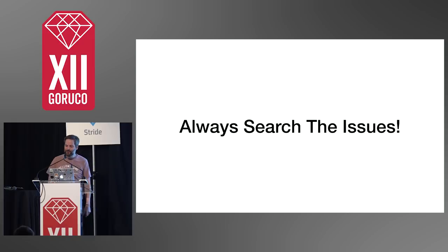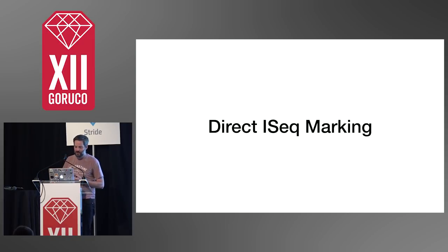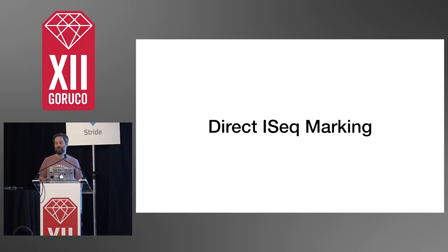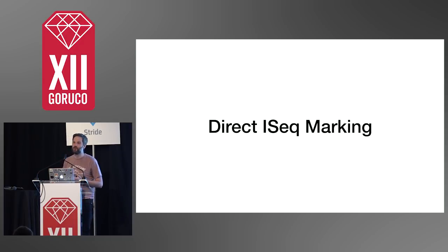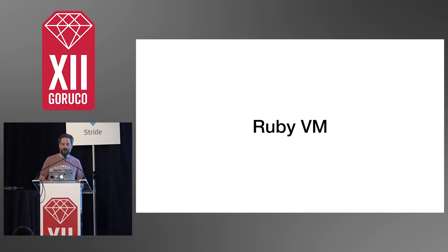The next patch I want to talk about is called direct instruction sequence marking. Unfortunately, this technique means you need to know a little bit about how Ruby's virtual machine works in order to understand it. So we're going to talk about Ruby's VM for a minute — actually more than a minute because I need more than a minute.